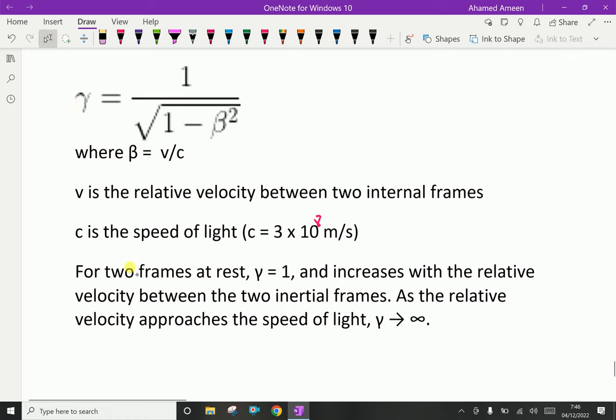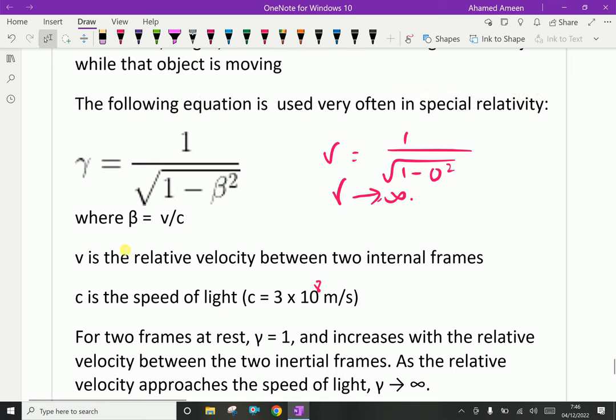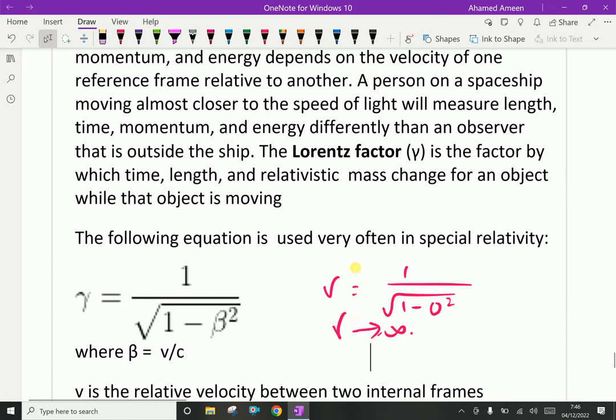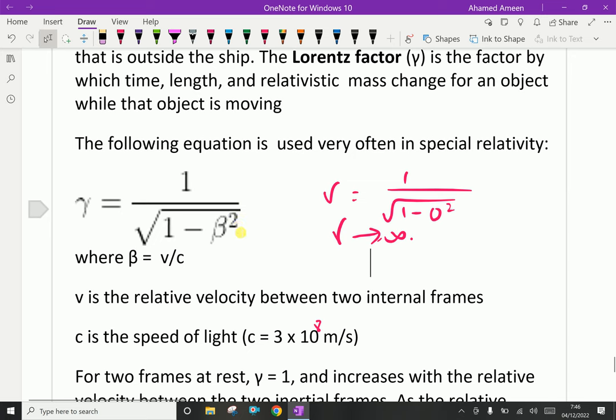Look at here. Suppose gamma equals one over square root of one minus zero. Of course, v by c is not zero, it's not possible to reach, but it's near to one. That means gamma becomes infinity. The Lorentz factor becomes infinity. If a body is at very high speed, its mass also becomes infinity.